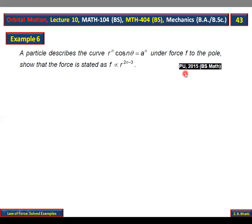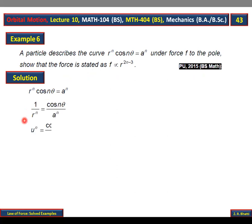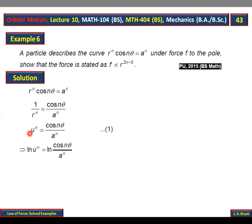Yeh BS Math 2015 ki university ke paper mein aaya tha. Ab dekhte hain: pehla step — equation likhi: r^n cos(n theta) = a^n. Pehla step yaad hai: r ki jagah 1 over u. Aapne pehle reciprocal kar liya aur r ki jagah 1 over u kiya, to 1 over r ki power n jab u ki power n aa gaya. Agla step: derivative lena hai, lekin u ki power n ko khatam karne ke liye log lete hain dono taraf derivative lene se pehle.